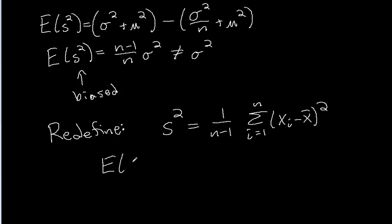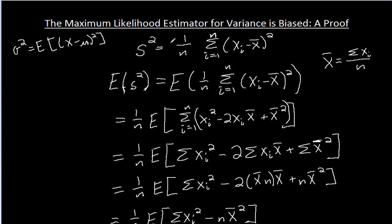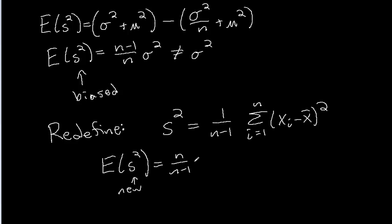Now the expectation of the new s² is going to be the expectation of the old s² — but notice that we've taken away the n and divided by (n − 1). Essentially, we've taken the original formula and multiplied by n over (n − 1), so the n's cancel and you're left with (n − 1) on the bottom. By linearity, we can bring that constant out: n over (n − 1) times the expectation of the old s², which is (n − 1)/n · σ², and indeed that equals σ².